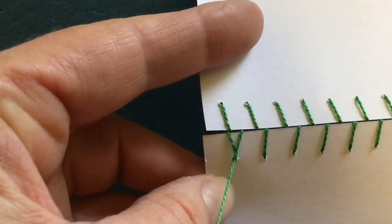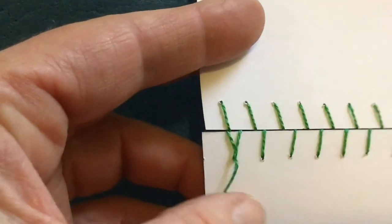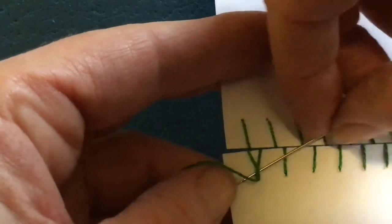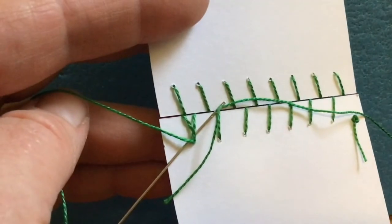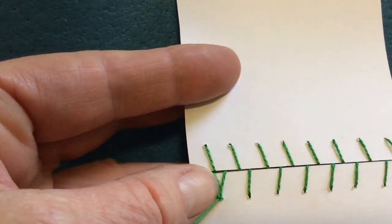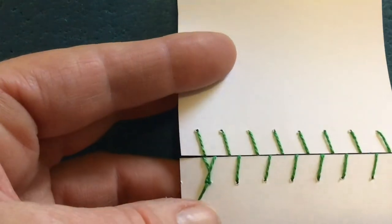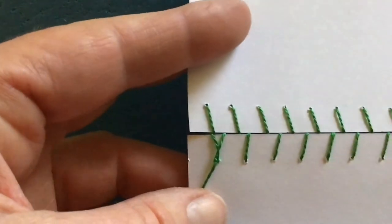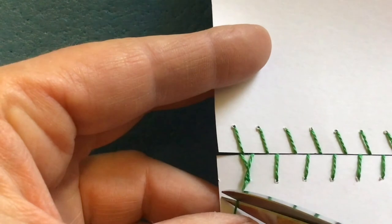So I pull that tight but not so tight it rips the paper. That's the big thing. I'm going to do that again. Pull that tight. Then I snip my knot off about right here.